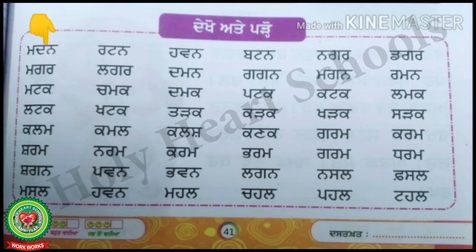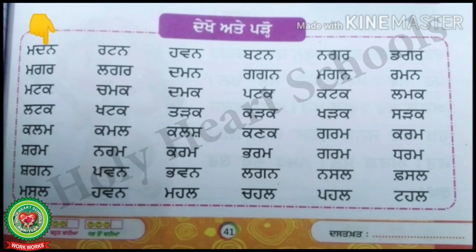Firstly look at the first line and start with the first word: mamma dadanana — madan. Then the second word of the first line is mamma gagarara — magar. Now look at the third word: mamma tanka kakka — matak. Next is lalatanka kakka — latak. Then kakka lalamamma — kalam.